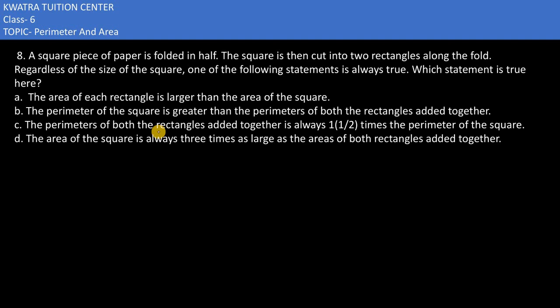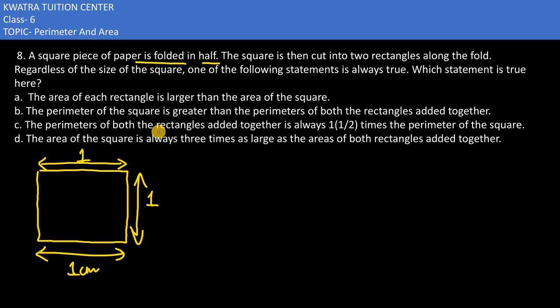Let's have a look at the 8th one. It says a square piece of paper is folded in half. We have a square piece and we have folded it in half. Let's say that we have a square and its measure is 1 each. What is the size of each side? 1 cm. Let's assume this and check the statements.